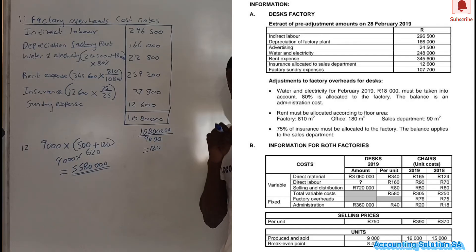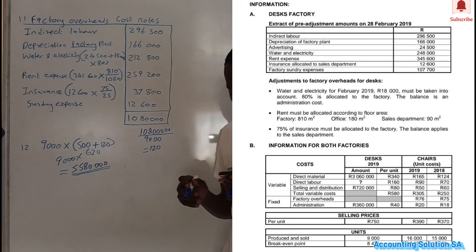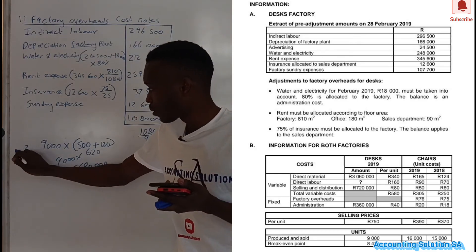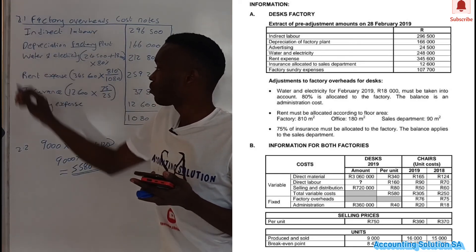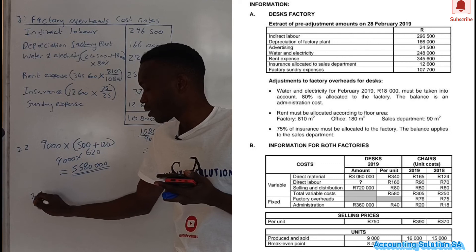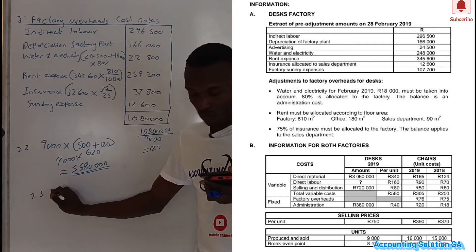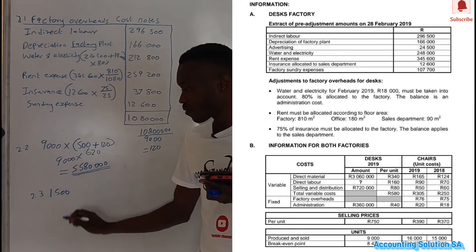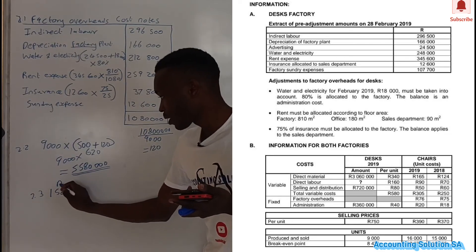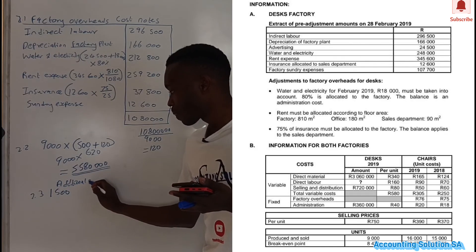Question 1.2.3: since they want to produce an additional 1,500 desks, calculate the additional profit you can expect. The formula for additional profit is: additional units multiplied by contribution per unit.